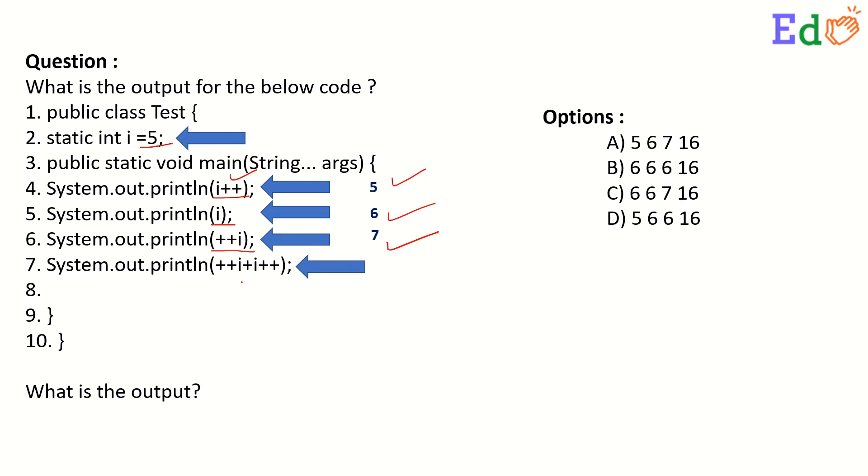And here it is first pre increment then plus then post increment. So pre increment it will increase by 1. It will become 8. From 7 it will become 8. And here post increment so it will remain 8. 8 plus 8 it will be 16.